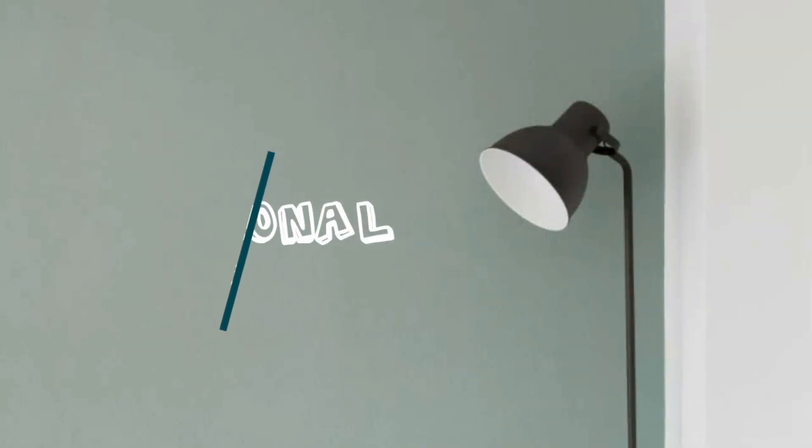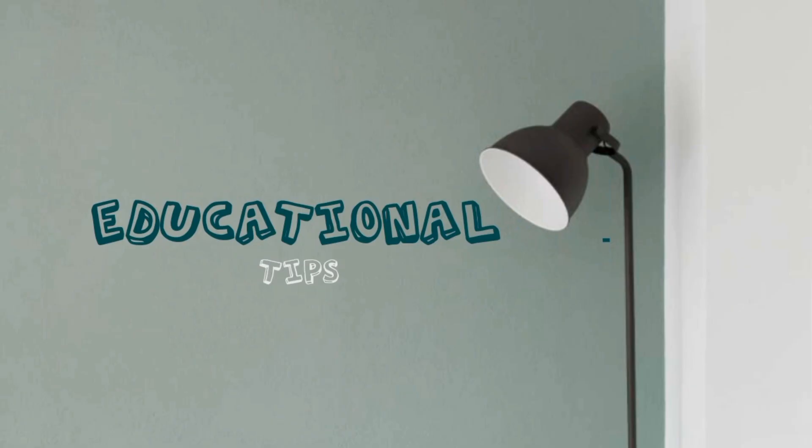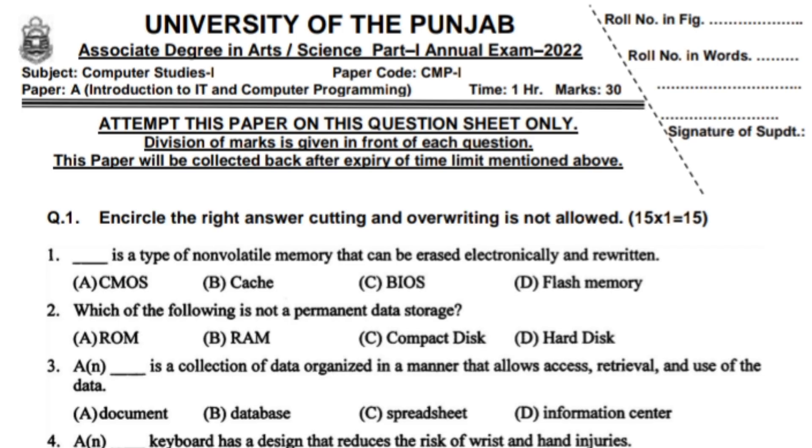Assalamu alaikum, hope you will be fine. Today we will solve the third year computer 2022 paper. Let's start. Flash is a type of non-volatile memory that can be erased electronically and rewritten. This is the right option, flash memory.